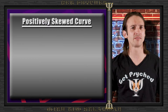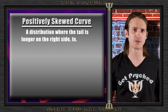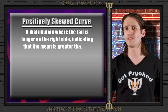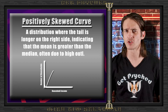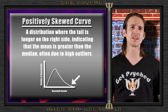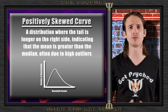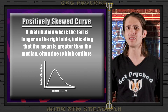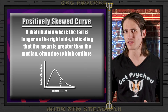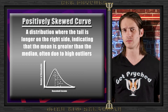First, we're going to talk about positively skewed curves. In a positively skewed distribution, most of the data clusters towards the lower end of the scale, with the tail stretching out towards the higher numbers. When we have a positively skewed distribution, it means that the mean is typically greater than the median, which is in turn greater than the mode.